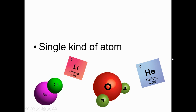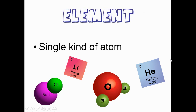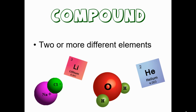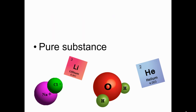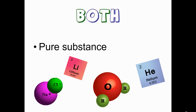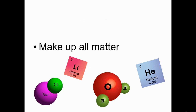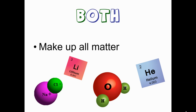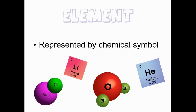A single kind of atom is an element. Two or more different elements is a compound. Something that is a pure substance is both elements and compounds. Things that make up all matter are both elements and compounds. Something represented by a chemical symbol is an element.